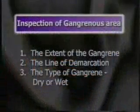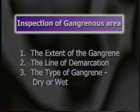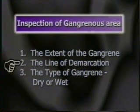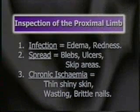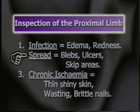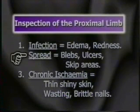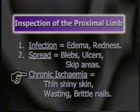To revise: first inspect the gangrenous area — note the extent of the gangrene, the line of demarcation, and the type of gangrene, whether dry or wet. Then examine the proximal limb for evidence of infection, i.e. edema and redness; for evidence of spread of gangrene, i.e. blebs, ulcerations, and skip areas; and evidence of chronic ischemia — thin, shiny skin with scanty hair, wasting, and brittle nails with transverse ridges.